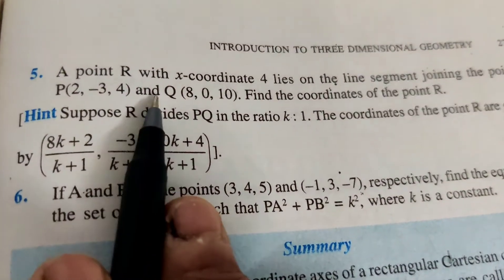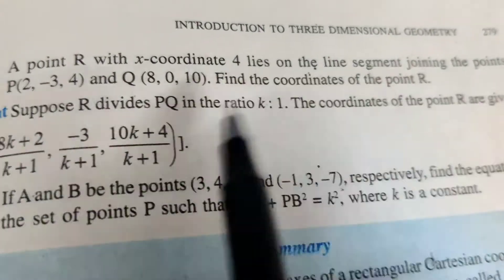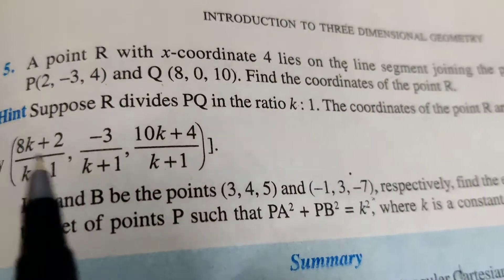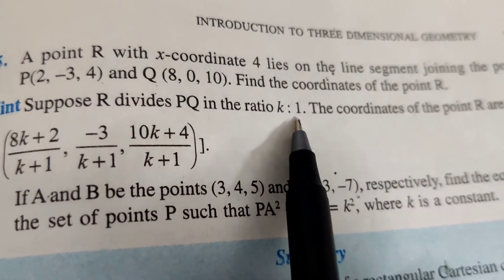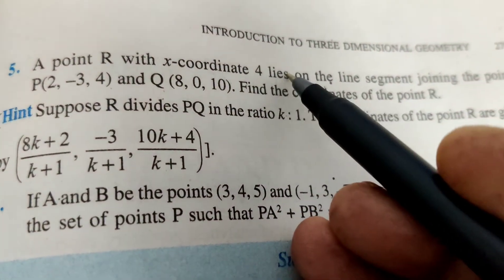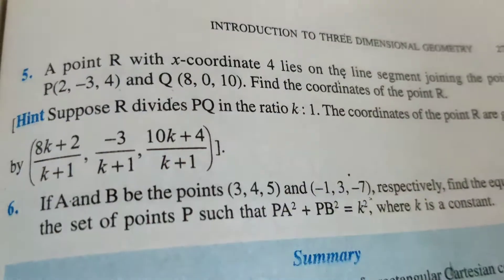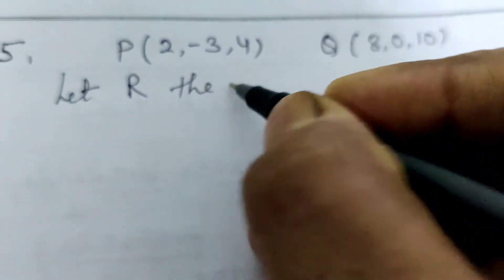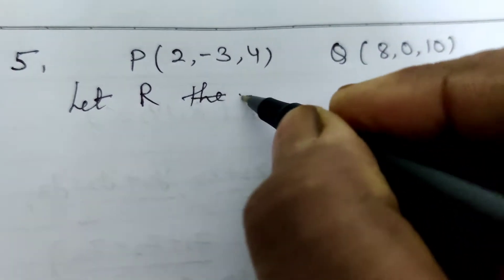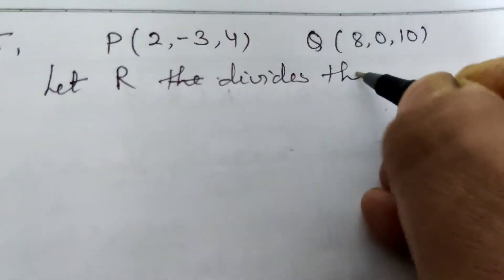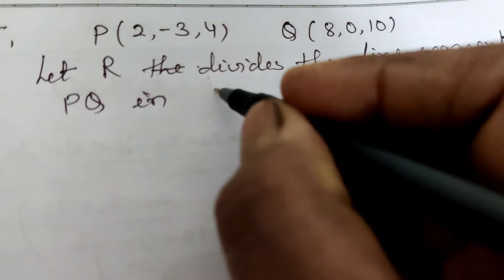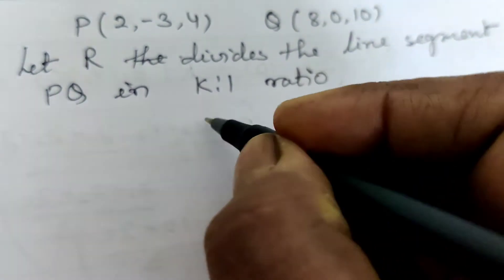Question number 5: A point R with x-coordinate 4 lies on the line segment joining P(2, -3, 4) and Q(8, 0, 10). Find the coordinates of point R. Let R divide PQ in ratio k:1. The x-coordinate of R by section formula is (8k + 2)/(k + 1).